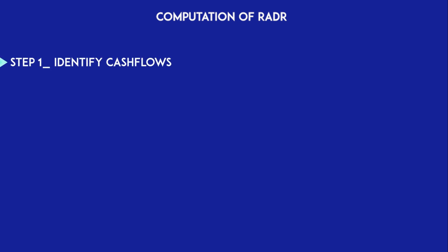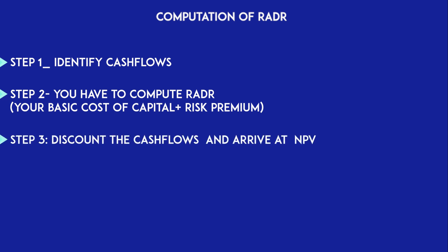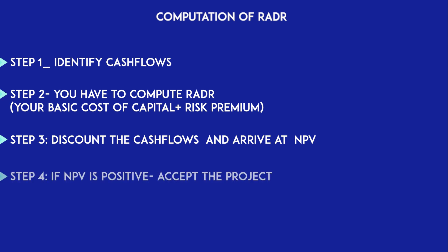The computation of RADR is simple. First, identify cash flows. Second, compute the RADR: take your basic cost of capital and add a premium for risk — basic cost of capital plus risk premium equals RADR. Then discount the cash flows using this rate to arrive at net present value. If the NPV is positive, go ahead with the project; otherwise, reject it.